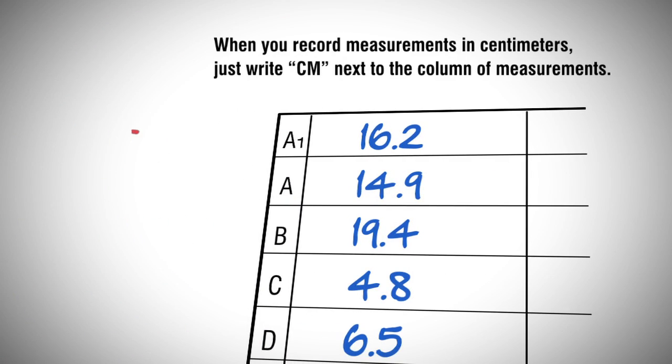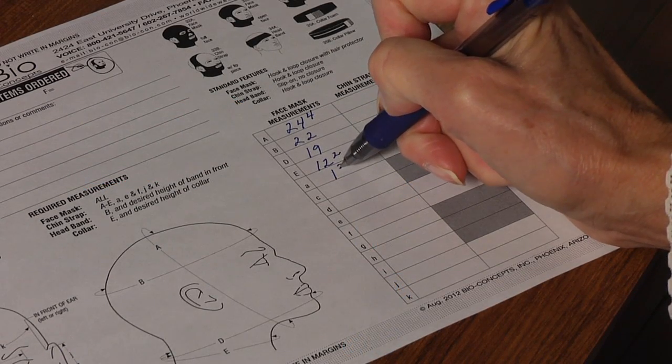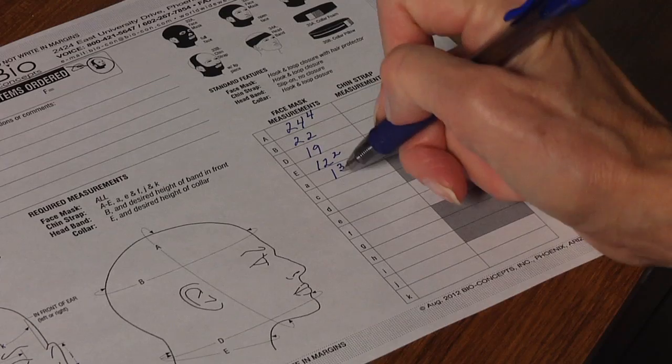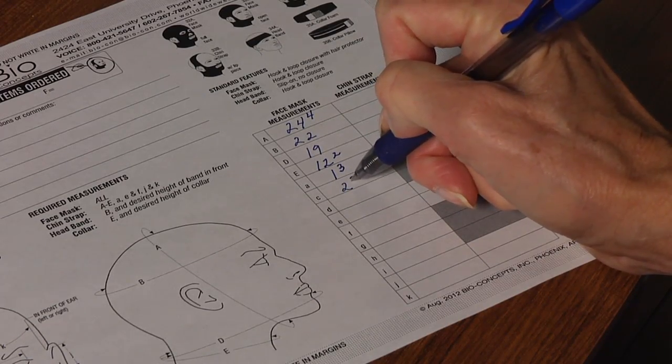When you record measurements in centimeters, just write CM next to the column of measurements. Follow these instructions exactly to save time and get your patient's garments as quickly as possible.